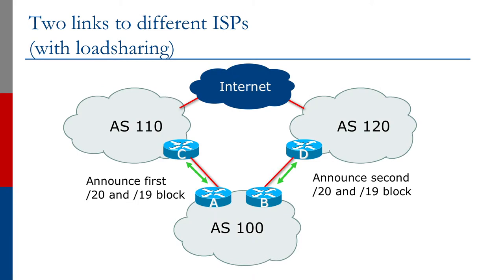Even traffic from AS120 going to the first half of the address space will go all the way through the internet and AS110 to reach AS100. That's one of the side effects of leaking sub-prefixes - they're more specific than the covering aggregate, and traffic will always follow that over the covering aggregate.